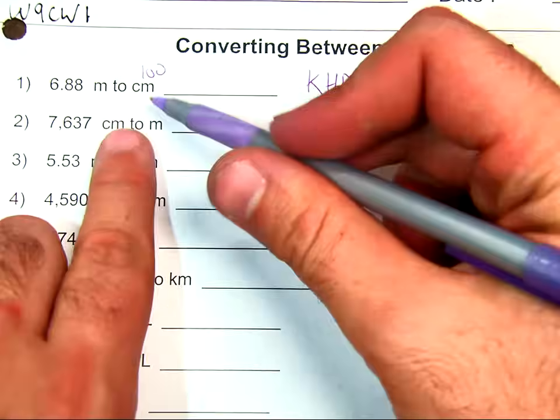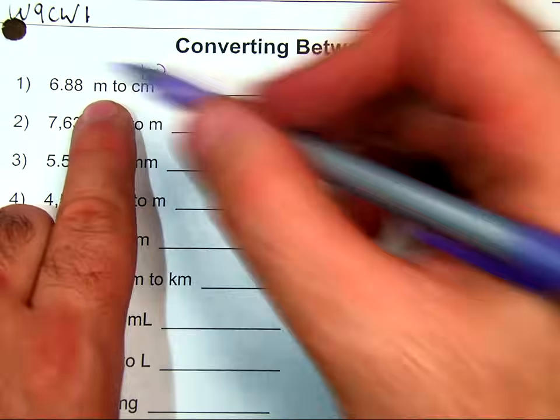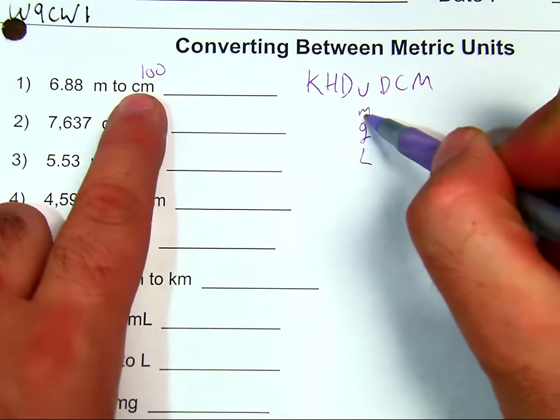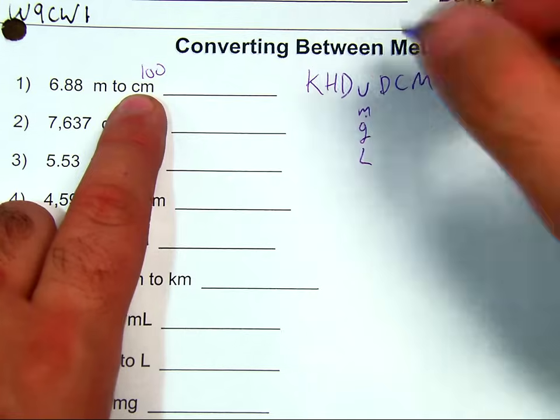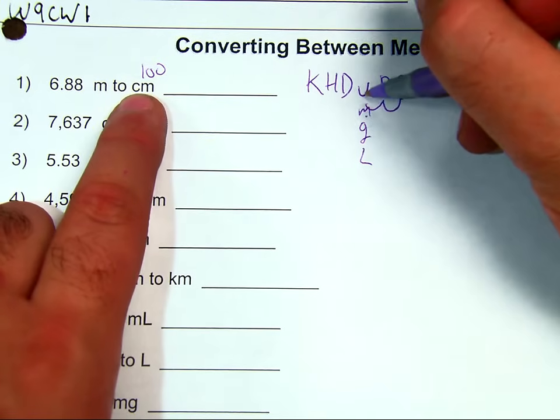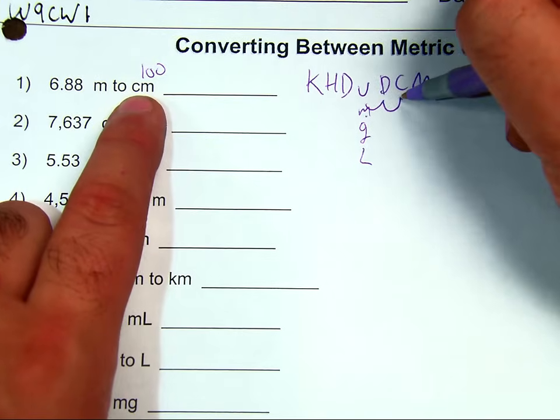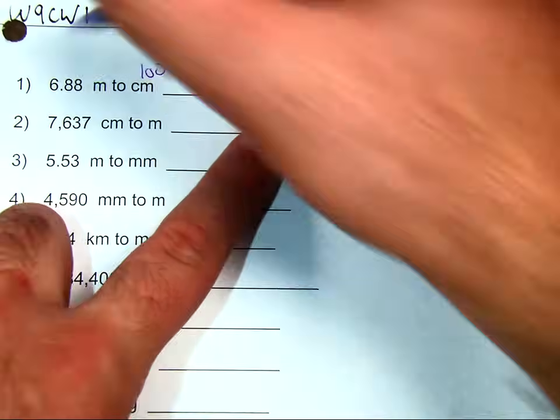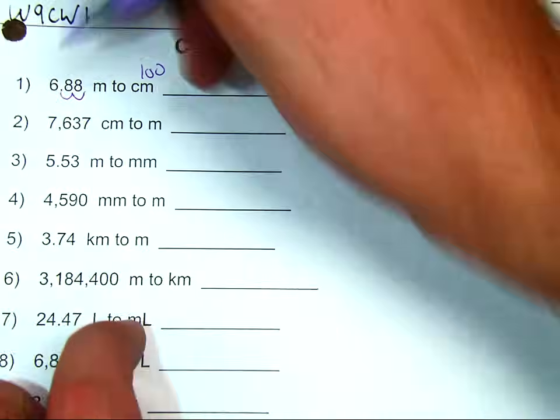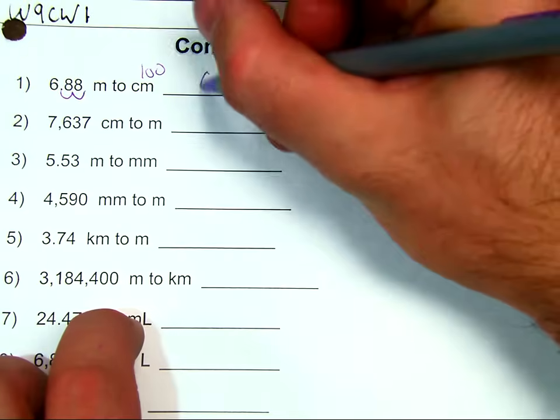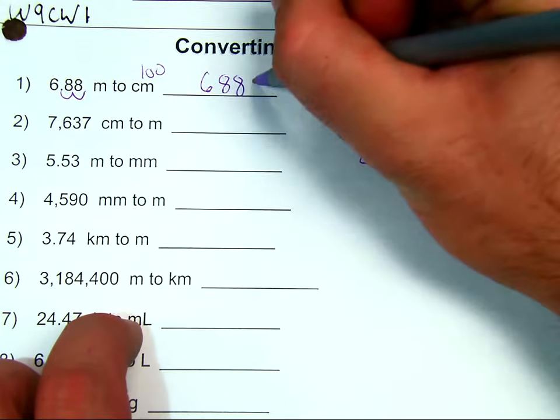So, we're converting from meters to centimeters. I'm going to count how many spaces I'm going to move over. I'm going one, two spaces from my M to my C. In this case, I'm going to move over two spaces to the right as well. So, my final answer will be 688 centimeters.